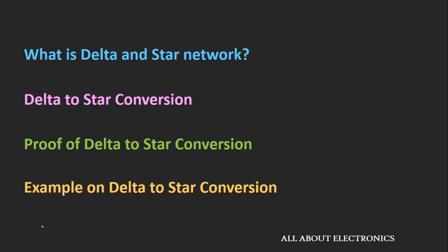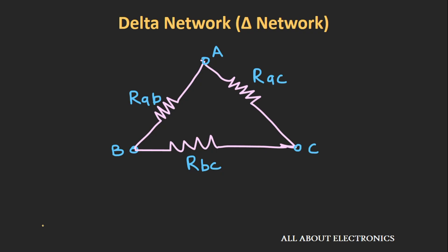Let's first understand what is delta and star network. In the delta network, the circuit elements are connected in such a way that they form the shape of a triangle or a delta. That is why these networks are known as a delta network. In this network, nodes A, B, and C are the nodes, while the resistors RAB, RAC, and RBC are connected between these three nodes.